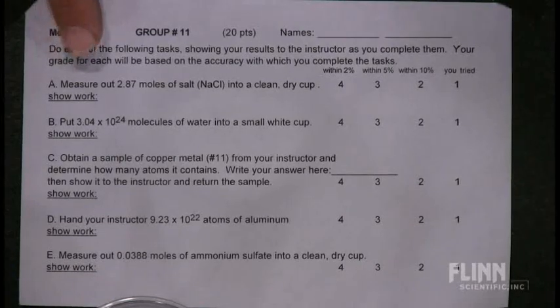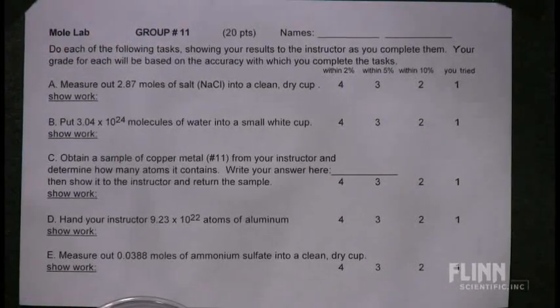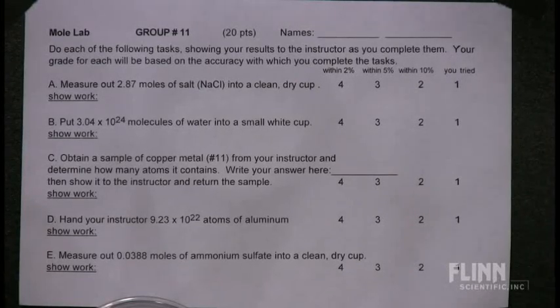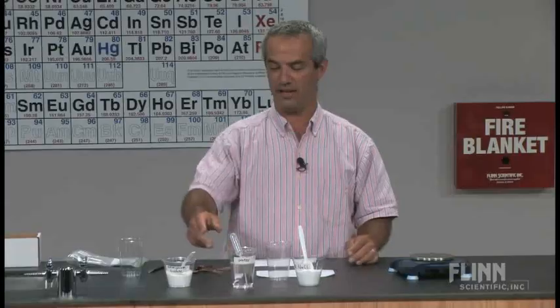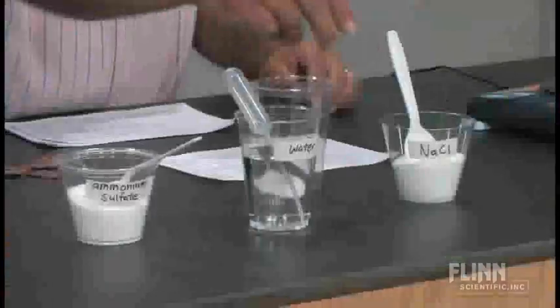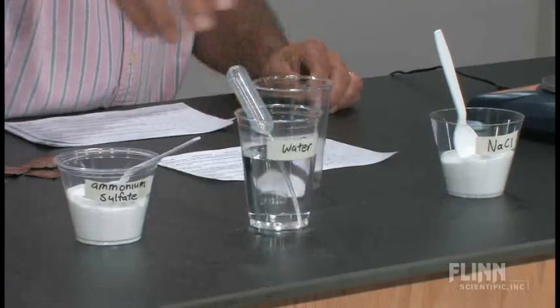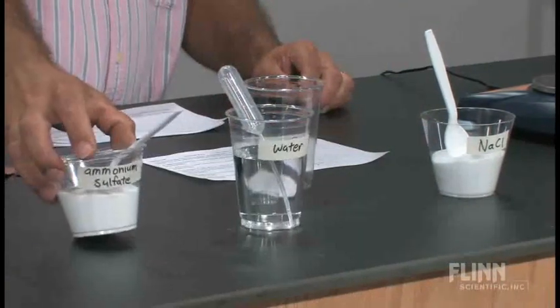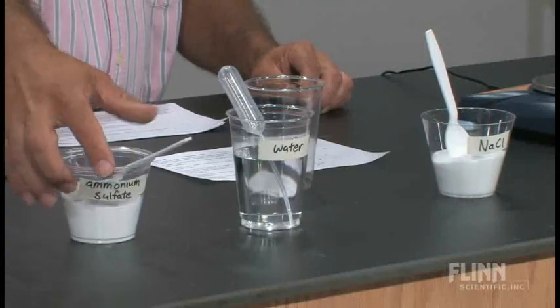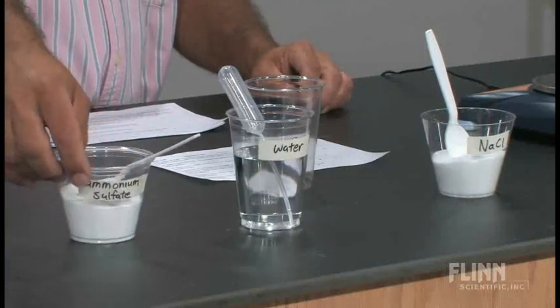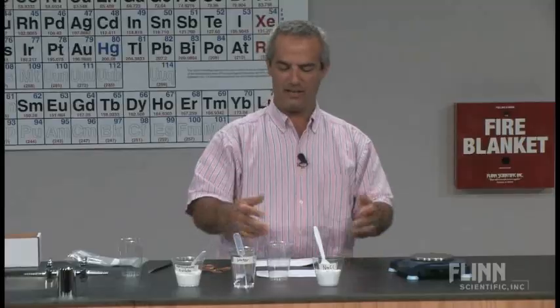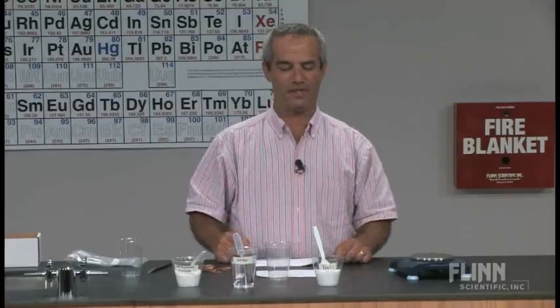Their first task is to measure out 2.87 moles of salt, NaCl, into a clean, dry cup. Out at the stations, they have cups that are labeled — here's NaCl, here's water, here's one that says ammonium sulfate, written out as the name, not the formula — and empty cups. And of course, balances.